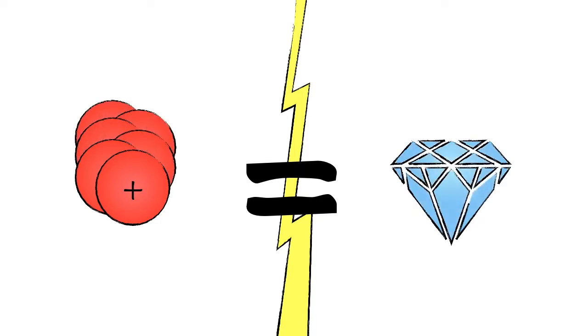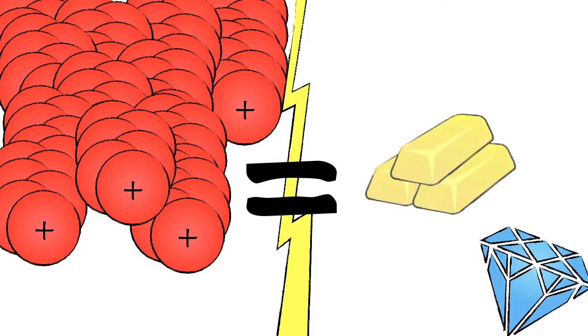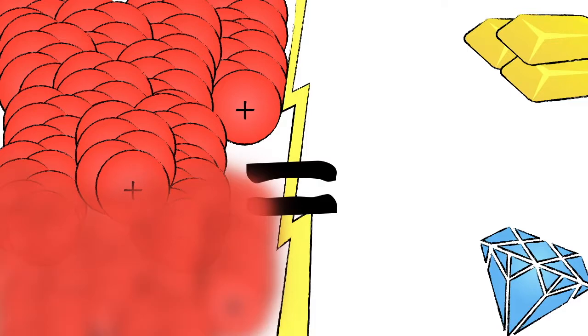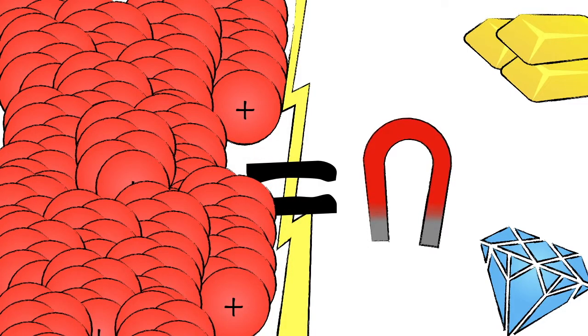And we can just keep adding protons and we get all sorts of different things like diamonds, gold, and super strong magnets. How much stuff can we make just by adding protons? About 118.